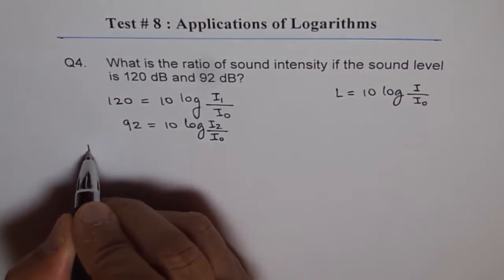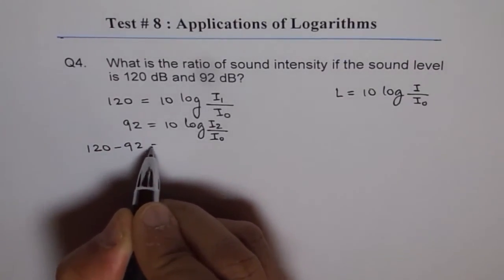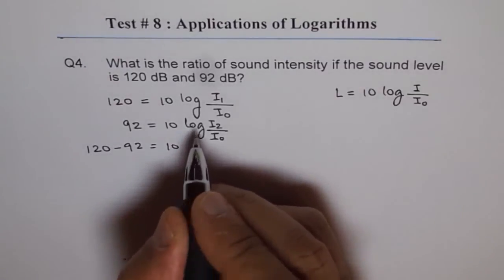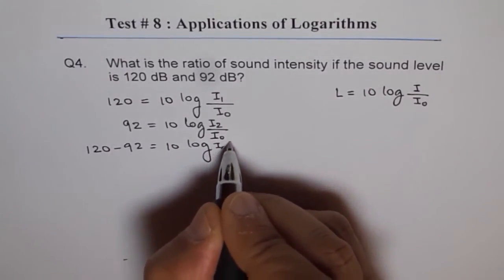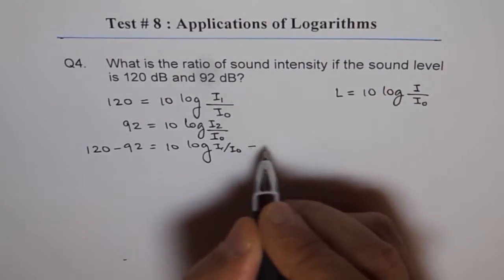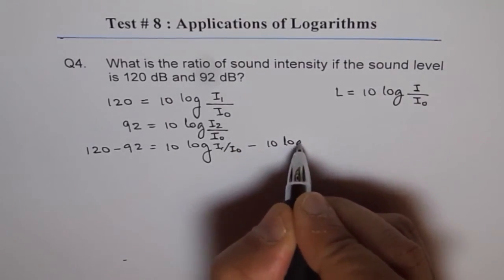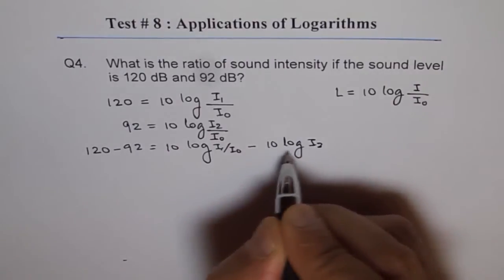So 120 minus 92 is equal to 10 log of I1 over I0 minus 10 log I2 over I0.